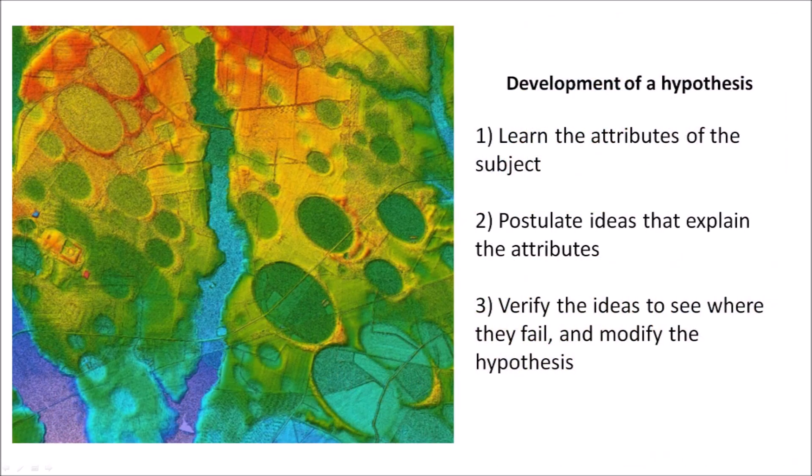The most important step for developing a scientific hypothesis is to learn the attributes of the subject. A valid hypothesis cannot be obtained without a clear definition of the subject. A hypothesis consists of ideas that explain the attributes of the subject. The final step is to verify the ideas to see where they fail and modify the hypothesis with new ideas that explain the attributes of the subject better.